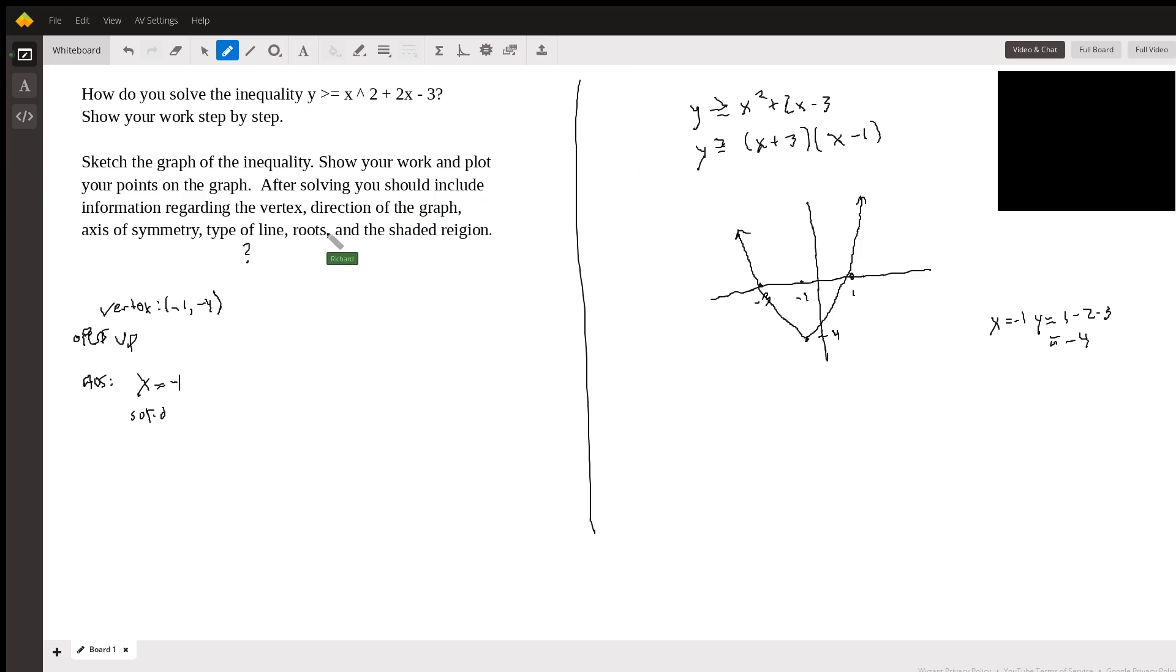And now all we have—oh, the roots are the points of intersection on the x-axis. So the roots could be (-3, 0) and then (1, 0).